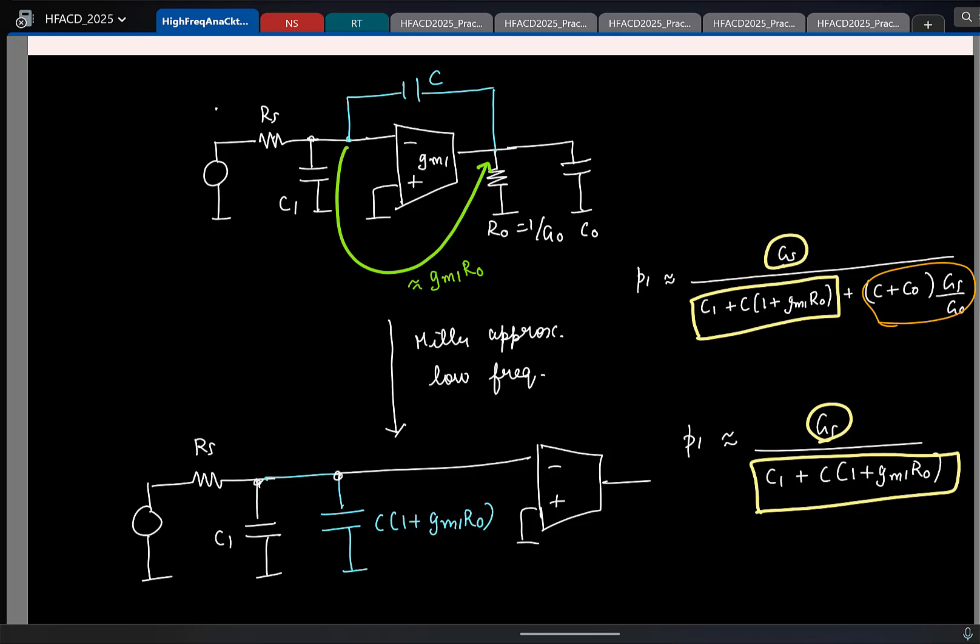So now if you actually see what we have done is, to find the low frequency pole, I found the total capacitance at this node, total resistance at that node. Similarly, if I were to find the high frequency pole, I should be looking at the total capacitance and the resistance at the output node. Is that fine?